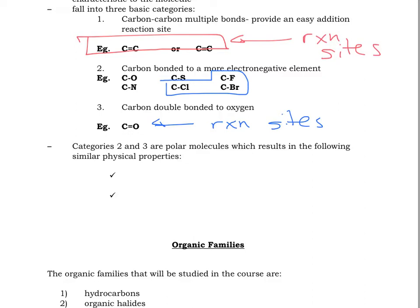Categories two and three are polar molecules. More electronegative elements, obviously that's going to be a polar molecule. And then oxygen is a more electronegative element, so there's no surprise that that's also a polar molecule.